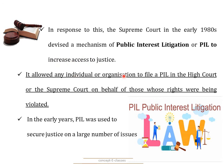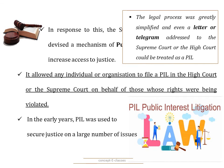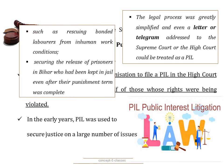In response to this situation, the Supreme Court in the early 1980s devised a mechanism of Public Interest Litigation (PIL) to increase access to justice. It allowed any individual or organization to file a PIL in the High Court or the Supreme Court on behalf of those whose rights were being violated. PIL is the use of law to secure human rights and equalities and help provide justice to those whose rights were being violated. The legal process was greatly simplified — simply a letter or a telegram addressed to the Supreme Court or High Court could be treated as a PIL. In the early years, PIL was used by activists to secure justice on issues like rescuing bonded labourers from inhuman work conditions and securing the release of prisoners in Bihar who had been kept in jail even after their punishment term was complete.